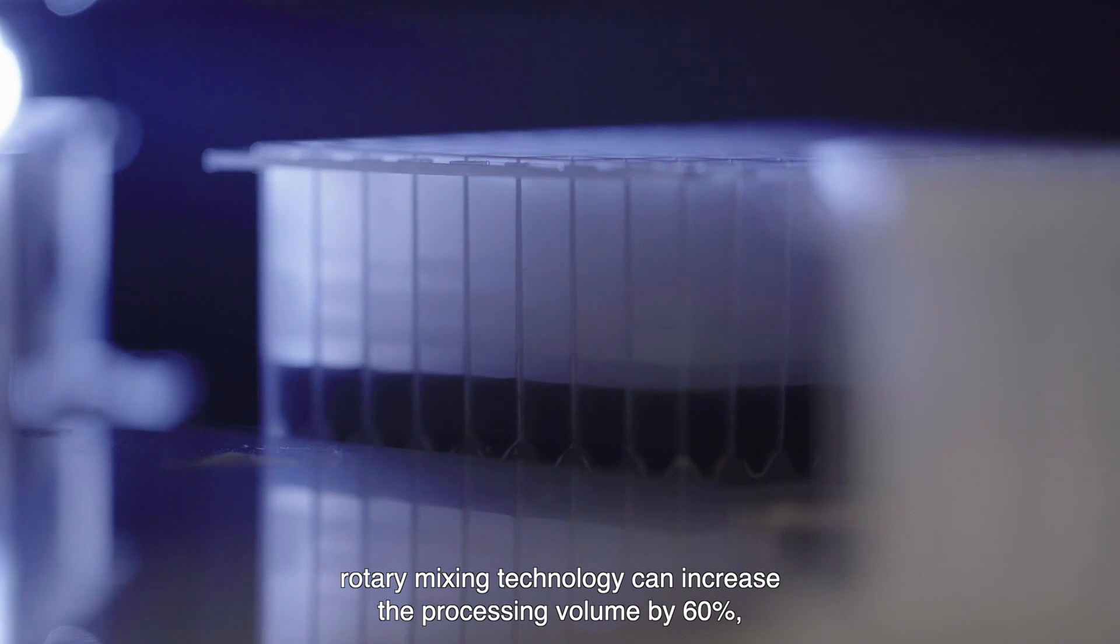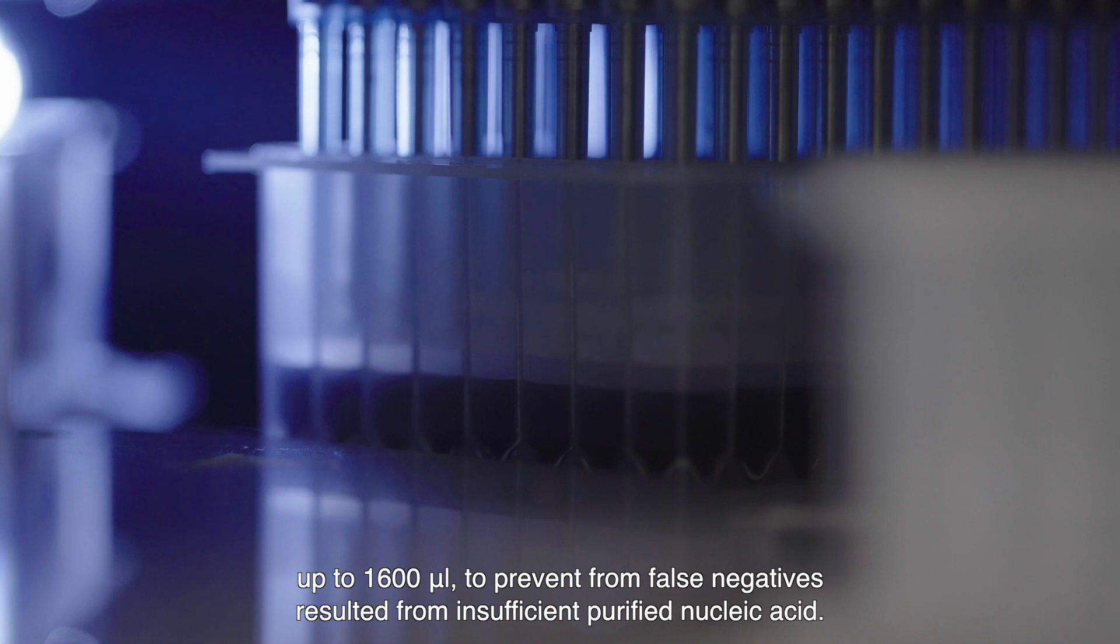First, it allows for more processing volume compared with conventional up and down binding techniques. Rotary mixing technology can increase the processing volume by 60% up to 1600 microliters to prevent false negatives resulted from insufficient purified nucleic acid.